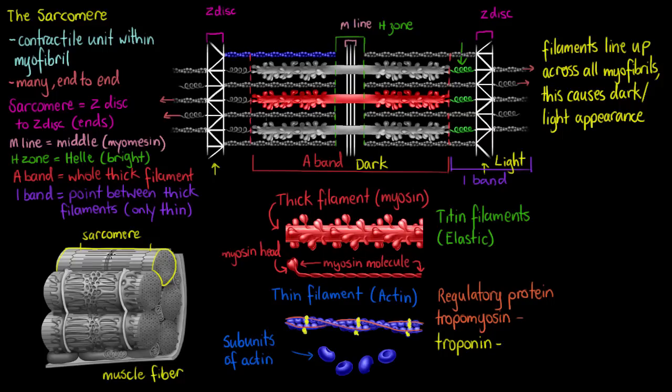And our I band is going to be our light band. The light band not having that thick myosin, so when we look at the muscle it's not going to appear as dark. And if we look on our myofibrils down here within a muscle fiber, we can see that all of the bands are going to be lining up together.